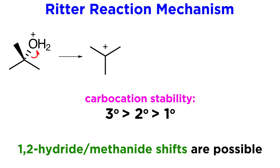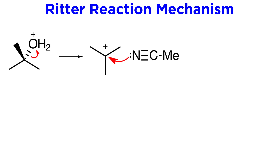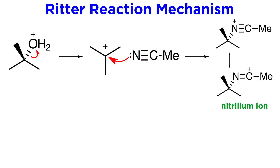We have also seen that carbocations tend to undergo isomerization via things like 1,2-hydride or methanide shifts, and this is also a potential side pathway in the Ritter reaction. The carbocation is attacked by the nitrile via the lone pair on the nitrogen, forming a nitrilium ion, and this can be written as the sum of two resonant structures.